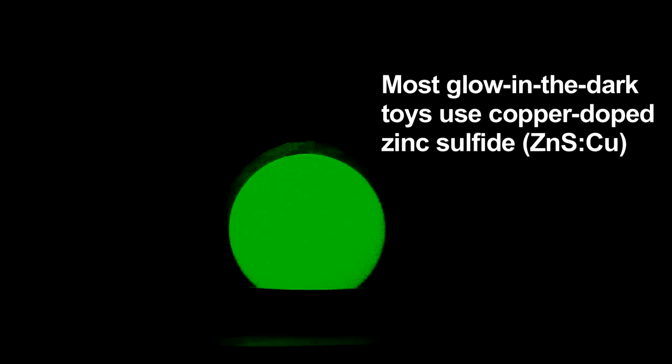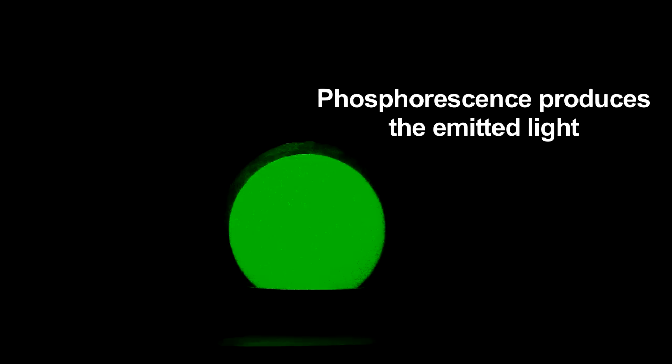The light provides energy to electrons in the coating, promoting them to higher energy levels. Once the light is off, these electrons slowly lose their added energy and return to their lower energy ground states. The energy lost is given off as light.